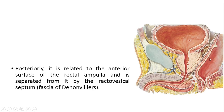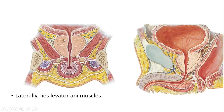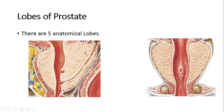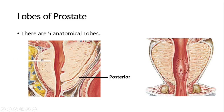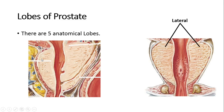The prostate is connected to the posterior aspect of the pelvic bone by the fascial puboprostatic ligament. Posteriorly it is related to the anterior surface of the rectal ampulla, separated from it by the rectovesical septum — also known as the fascia of Denonvilliers. Laterally, as you can see here, is the levator ani muscle. There are five anatomical lobes of the prostate gland: the anterior, the posterior, the median or middle, and the two lateral lobes.